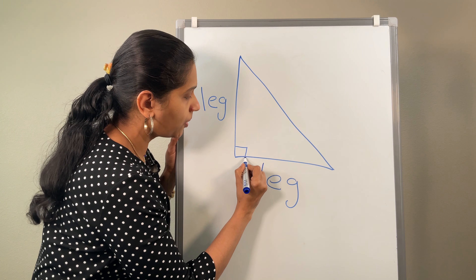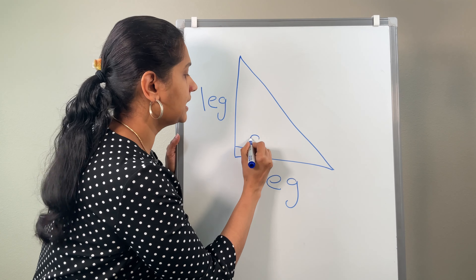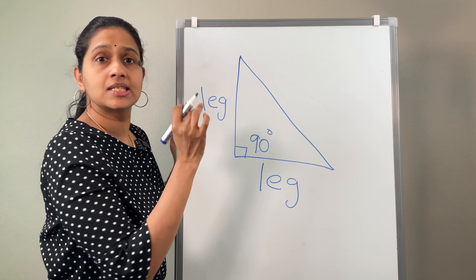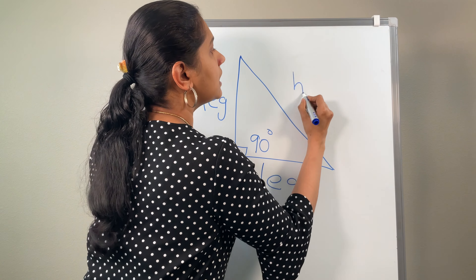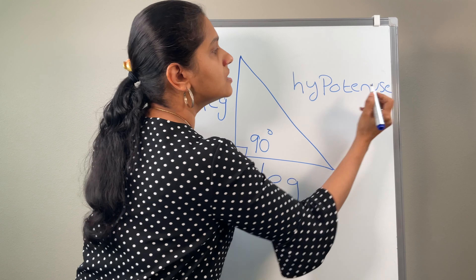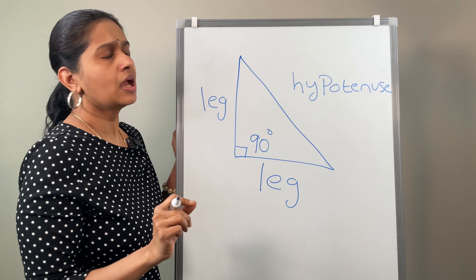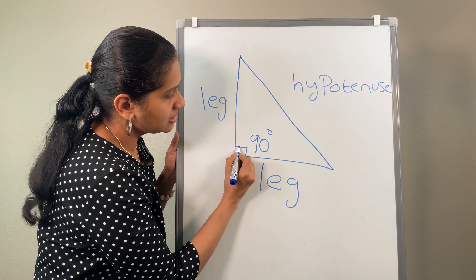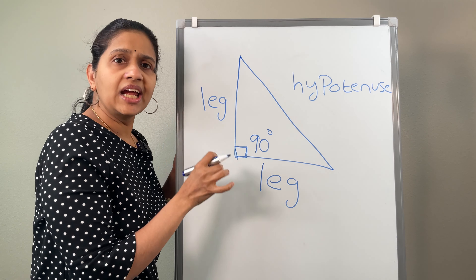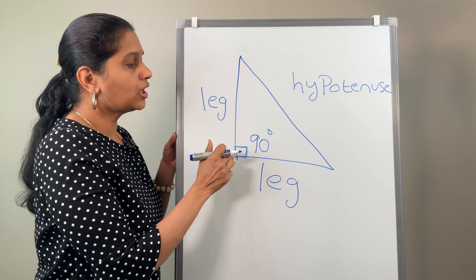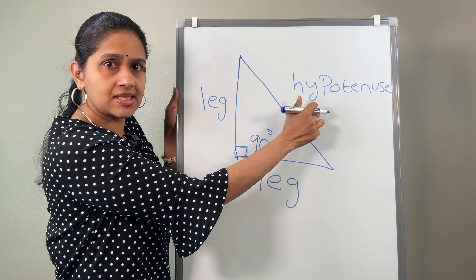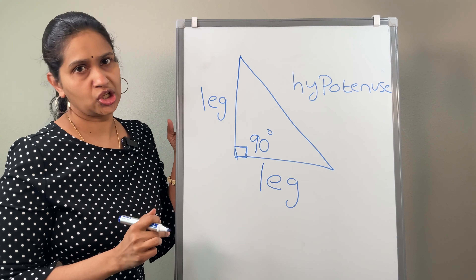You know the small box — this is the right angle, that is 90 degrees. The longest side is called the hypotenuse. Always in a right triangle, the side opposite to this right angle is going to be the longest side, and that is going to be the hypotenuse.